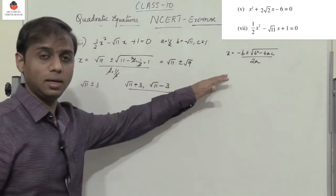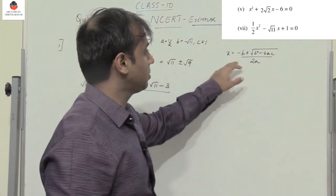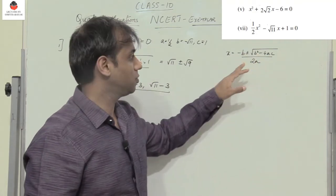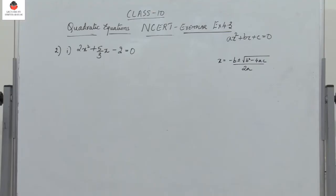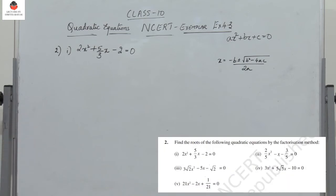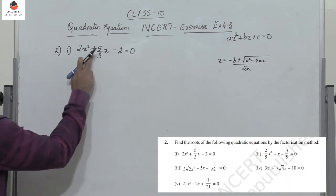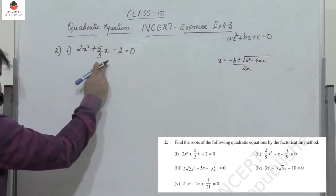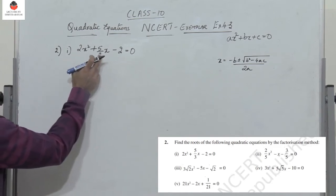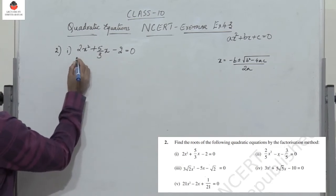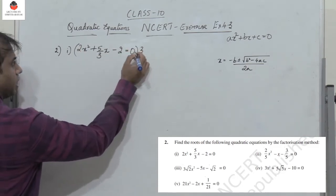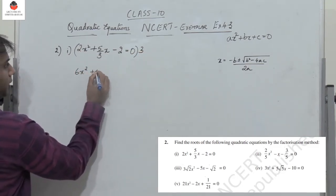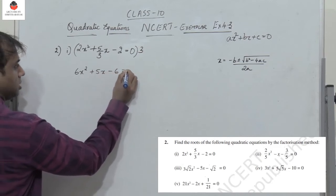Question 2 requires finding the roots by the factorization method. There are five equations given. The first equation is 2x² plus 5/3 x minus 2 equals 0. To eliminate the denominator, multiply the entire equation by 3, giving 6x² plus 5x minus 6 equals 0.